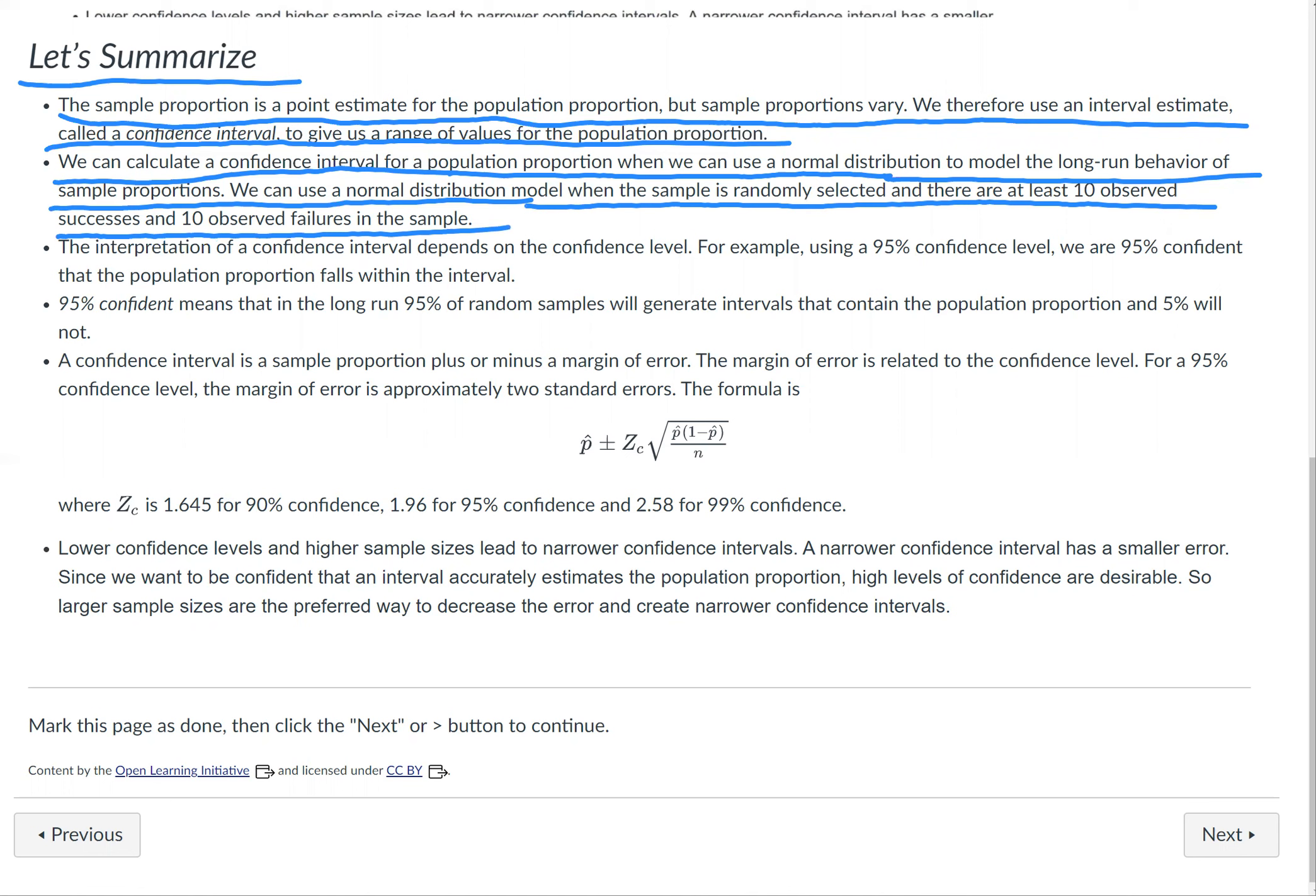The interpretation of a confidence interval depends on the confidence level. For example, using a 95% confidence level, we are 95% confident that the population proportion falls within the interval.